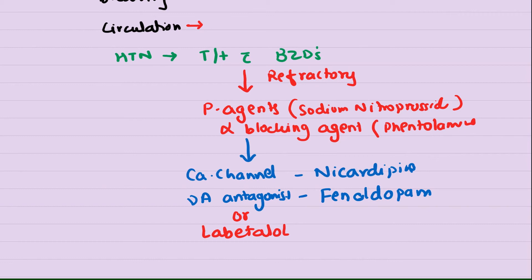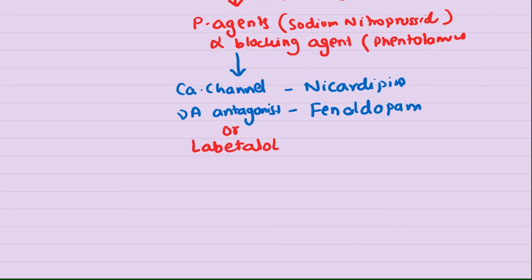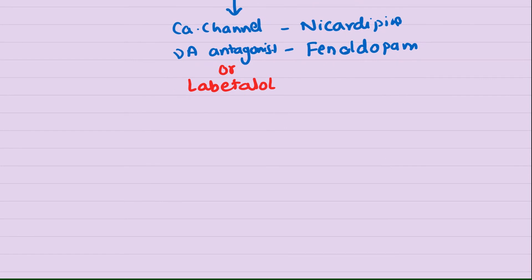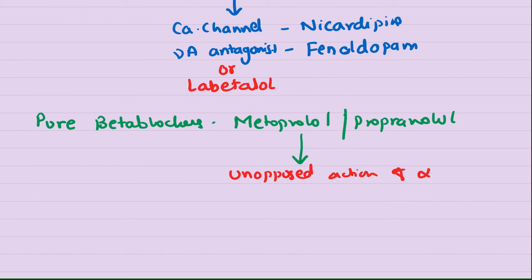One of the most commonly used drugs is labetalol, which is both an alpha and beta blocker. But the most important point in treating hypertension in patients who have consumed MDMA is you should never give them pure beta blockers. Pure beta blockers are metoprolol and propranolol. If you give pure beta blockers, there will be unopposed action on alpha receptors. When there is unopposed action on alpha receptors, it can cause coronary vasospasm and the patient may collapse. This is one of the important things you should remember.